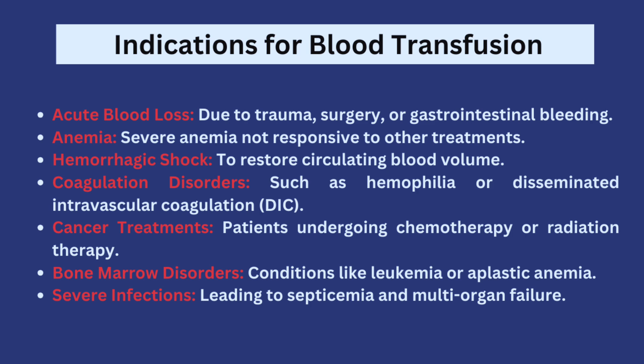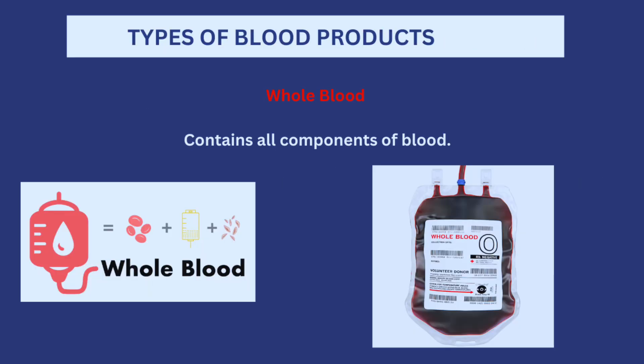Other indications include hemorrhagic shock, which is when a person goes into shock because of the loss of a large volume of blood. It could also be due to coagulation disorders such as hemophilia or disseminated intravascular coagulation. Blood transfusion is also part of cancer treatments — patients undergoing chemotherapy or radiation therapy usually receive transfusions. Bone marrow disorders like leukemia or aplastic anemia, and severe infections such as septicemia or multiple organ failure are also indications.